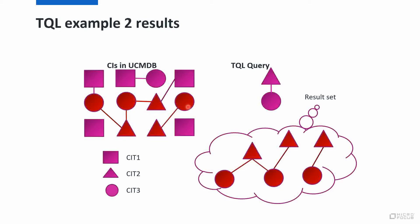What we actually return in memory are discrete sets of triangles and circles — this one, this one, this one, and this one — that would be 4 triangles and 4 circles. Then we do a merge in memory of the same CIs, so that this triangle is shown as connected to 2 circles, rather than showing 2 triangles which are the same object connected to 2 separate circles. That would confuse the user into thinking there are duplicates in the database. So we get the discrete result sets and then merge them before presenting to the user.